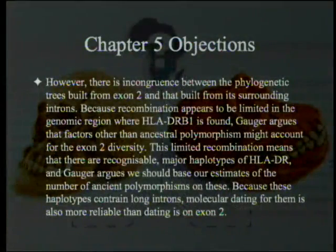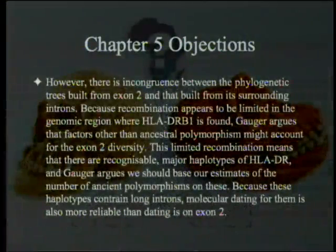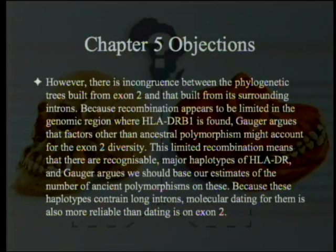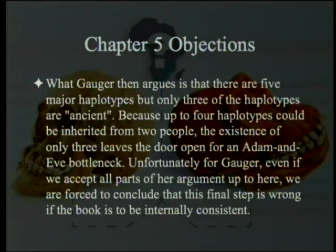However, there is incongruence between the phylogenetic trees built from exon 2 and those built from surrounding introns. The reason for picking on this one is because it was the first and it's the one most rubbed in creationist noses. Because recombination appears to be limited in the genomic region where HLA-DRB1 is found, Gauger argued that factors other than ancestral polymorphism might account for the exon 2 diversity. This limited recombination means there are recognizable major haplotypes of HLA-DR, and Gauger argues we should base estimates of ancient polymorphisms on these. Because these haplotypes contain long introns, molecular dating for them is also more reliable than dating on exon 2.